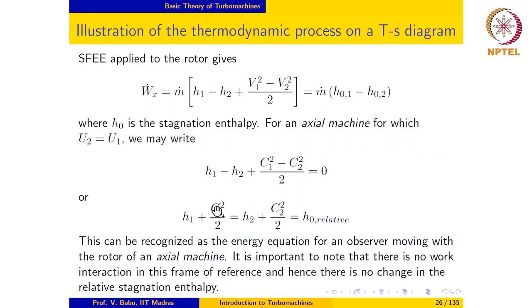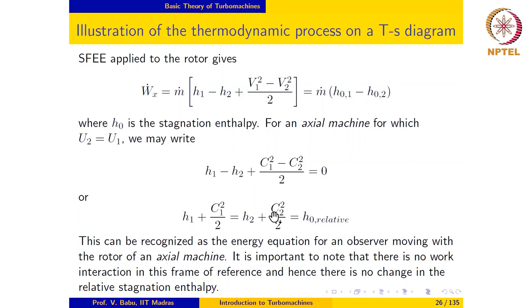The most important fact that comes out of this is that for an axial machine, h plus c squared over 2 is a constant, and this has very important consequences in the actual design and working of an axial machine, as we will see in a short while.